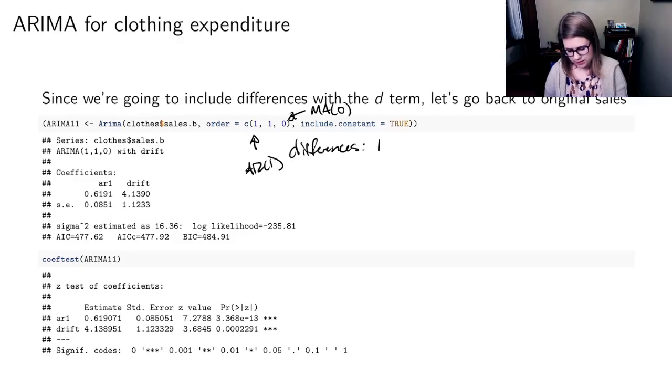And then we get some slightly different output, which you can see here, we get the AR1, and we get a term called drift. So it looks like they're both significant, so that's good.